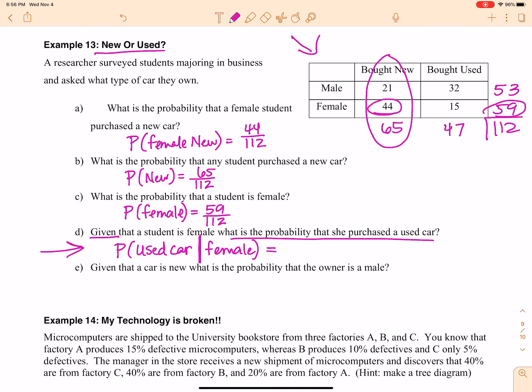All right, now my denominator is not going to consist of 112, it's going to consist of 59, because there are 59 females. Used car out of that would be 15. That is my answer.